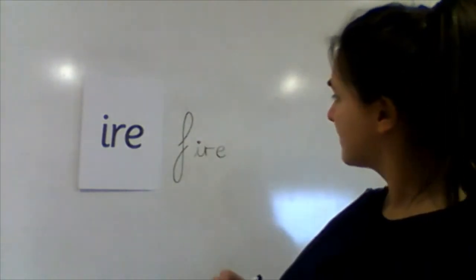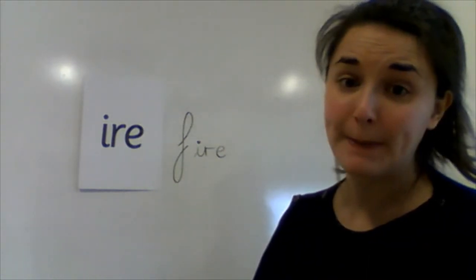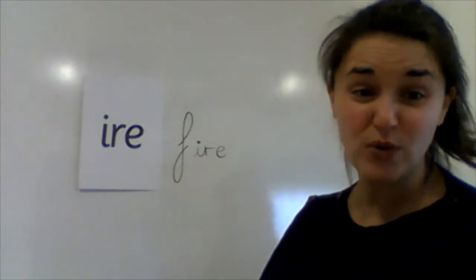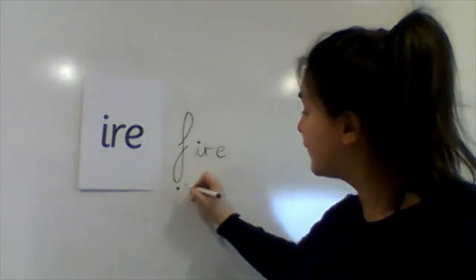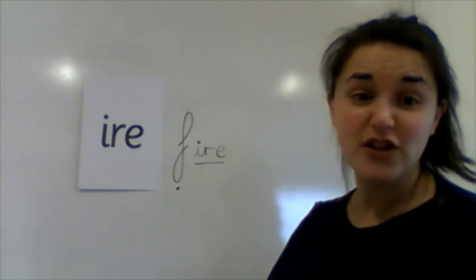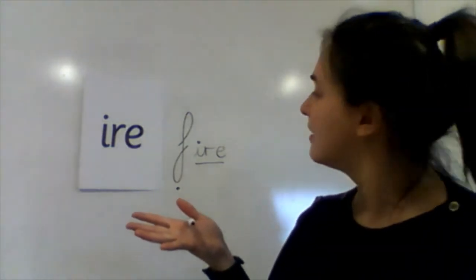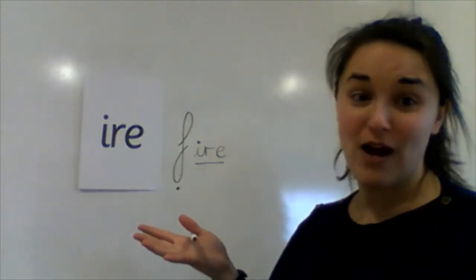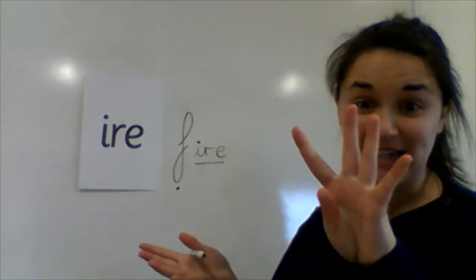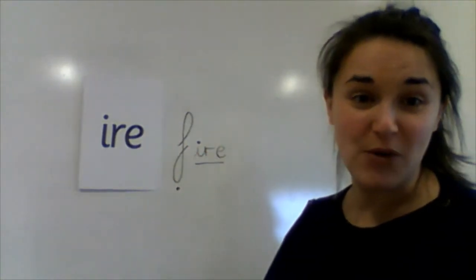How many sounds are in that word? There's just two, you're right. We have our F sound and then our ire sound. So there's only two sounds, but how many letters are there? You're right. There are four letters, but three letters together are just making one sound.